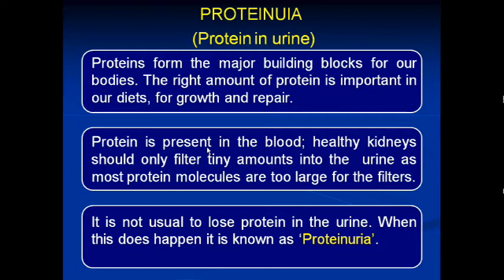Protein is also involved in the clotting of blood and numerous other functions. Healthy kidneys should not filter more than a tiny amount of protein into the urine, as most protein molecules are too large for the filter due to their high molecular weight. So it is not usual to lose protein in the urine; when this does happen, it is known as proteinuria.